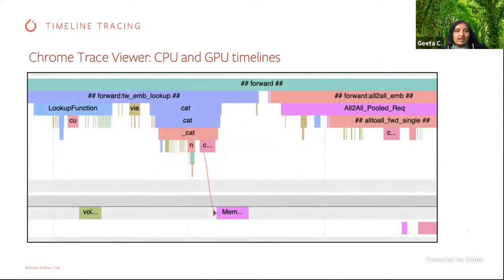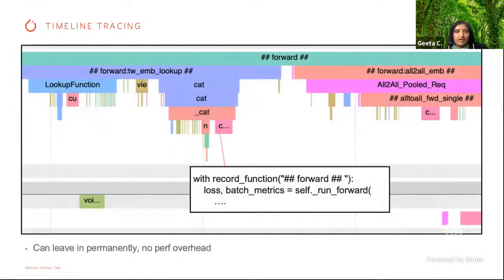This is what an actual output looks like. This is the Chrome Tracer view built into the TensorBoard plugin. You can see all the record functions used to annotate, and the actual operations from the CPU to the GPU. The 'with record function' is what you use for annotating — for example, the forward pass with TW embed lookup, et cetera. You get all the details below, so it is very easy to navigate and you can leave these record functions permanently on as they have very low performance overhead.